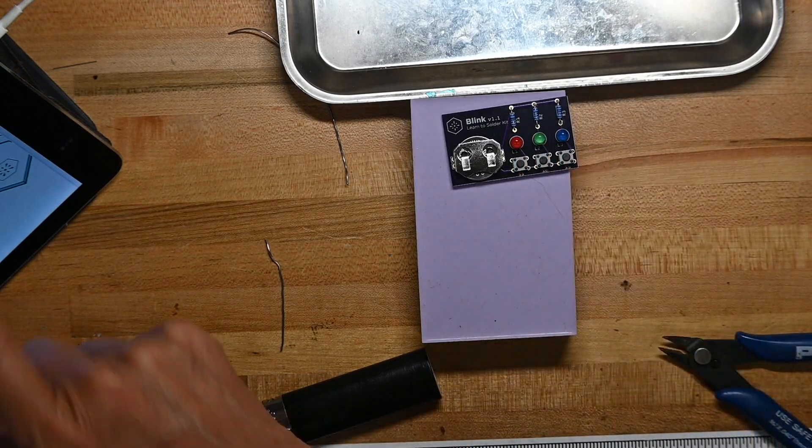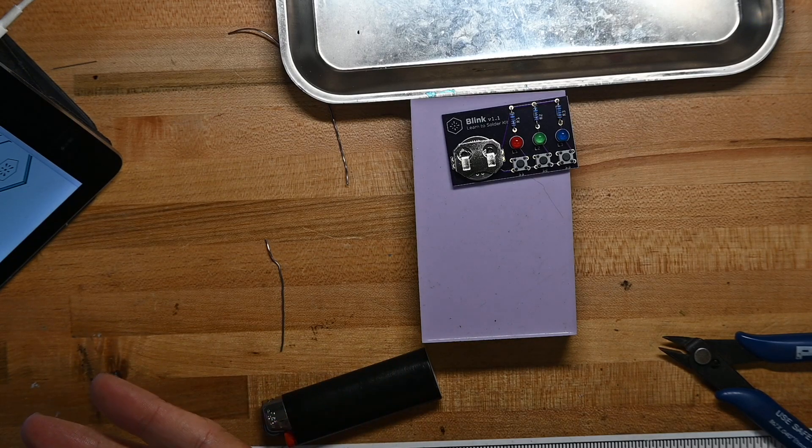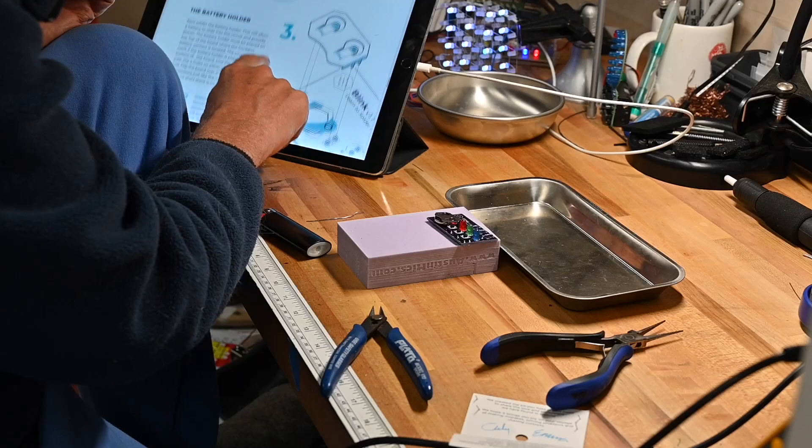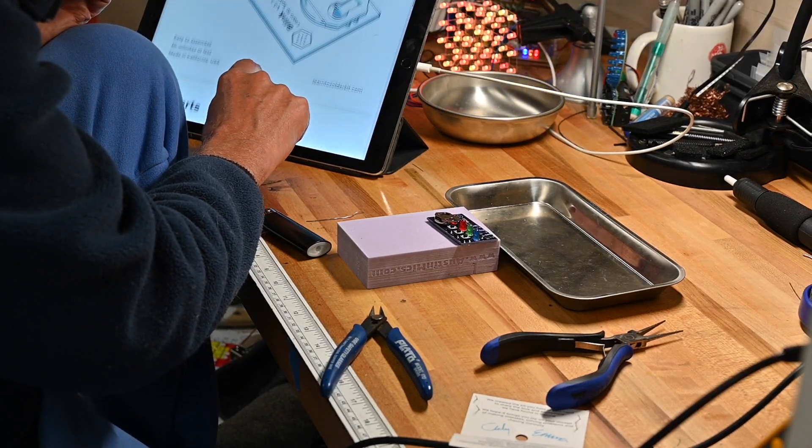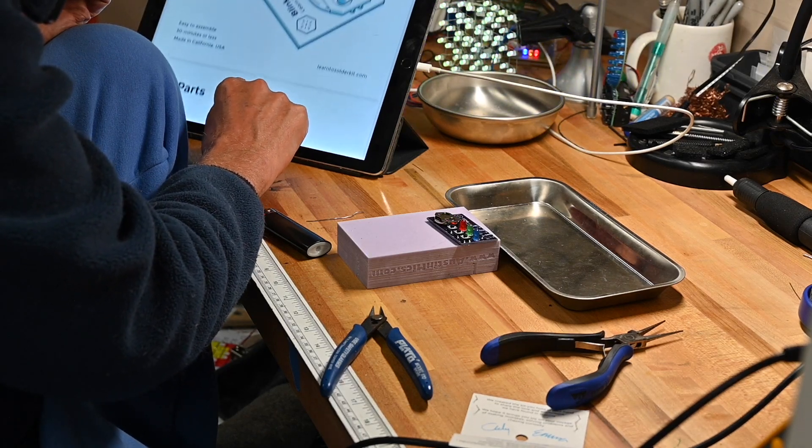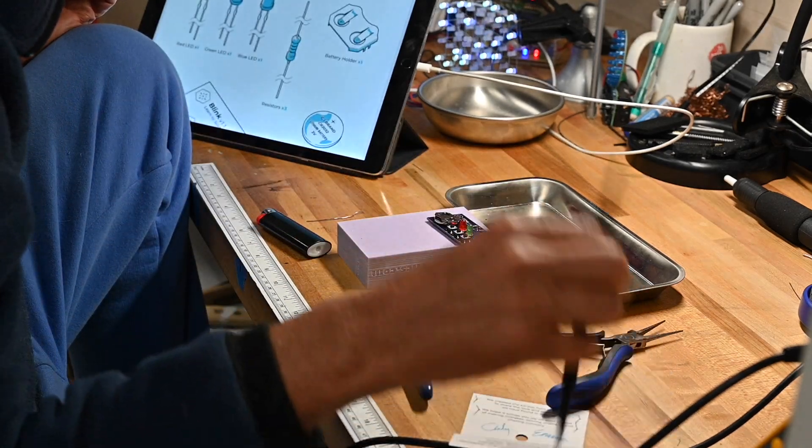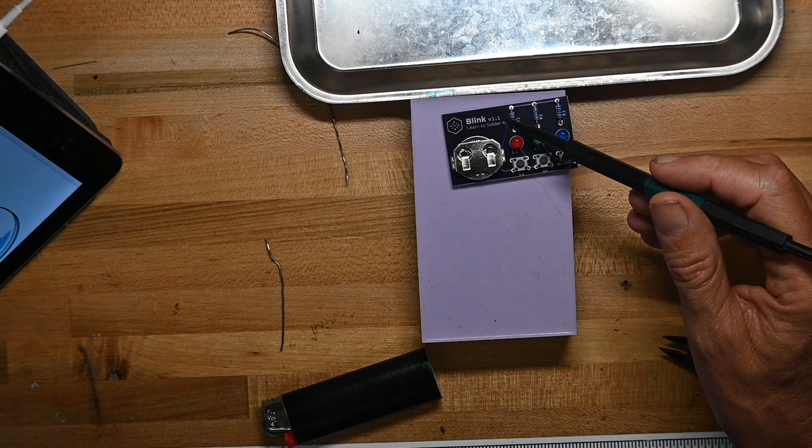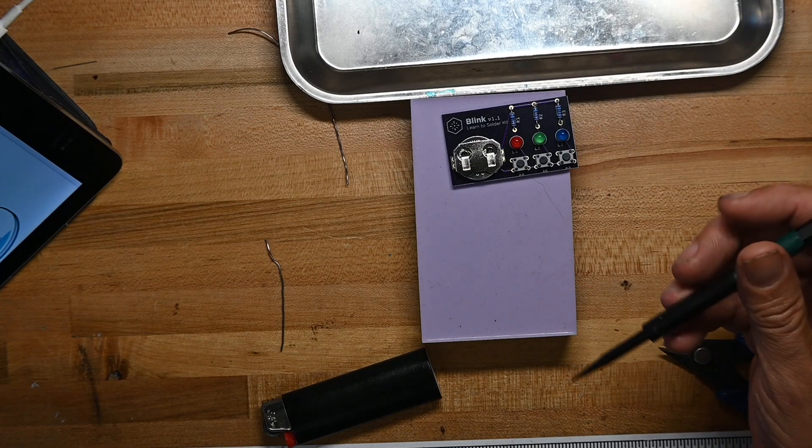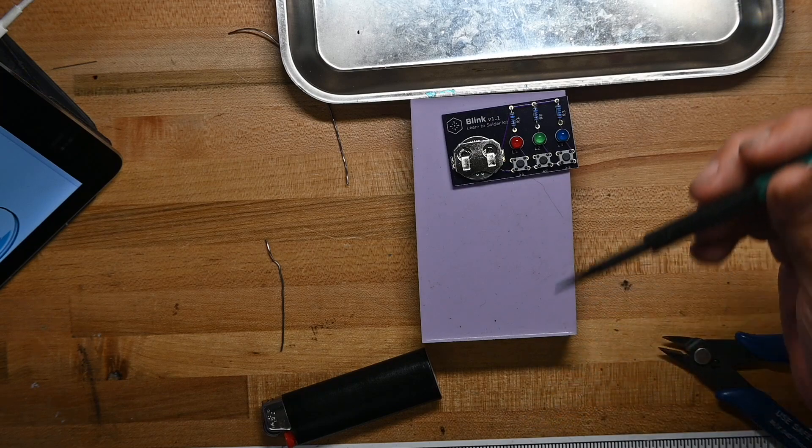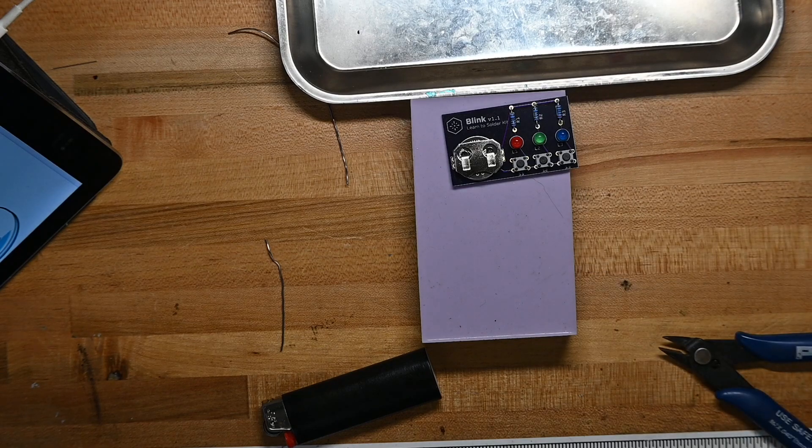The user guide or build guide does not have a schematic, does not have a little theory of operation section, which I think is really important for this type of project. Because you're not just teaching them to solder, you're getting them used to what the components are and basic theories of operation. They may not understand it, but they're starting to hear it, they're starting to read it, and I think that's important. They miss that in this kit.